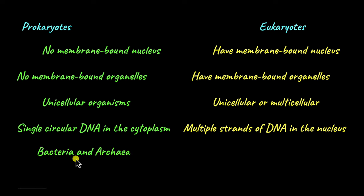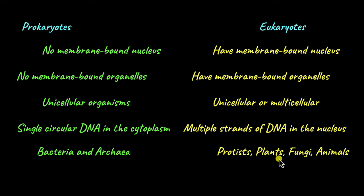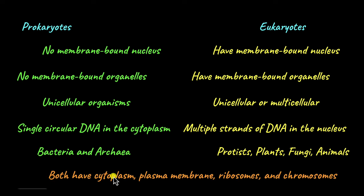Prokaryotes include all bacteria and archaea. Eukaryotes include protists, plants, fungi, and animals. As for similarities, both have cytoplasm, plasma membrane, ribosomes, and chromosomes. Prokaryotes do have DNA in the form of chromosomes — it just floats in the cytoplasm in a circular shape. So these are the differences and similarities between prokaryotes and eukaryotes, and we will explore more about them in upcoming videos.